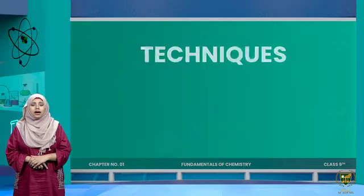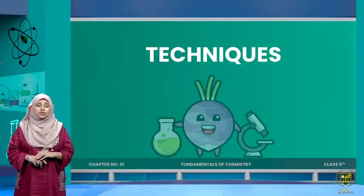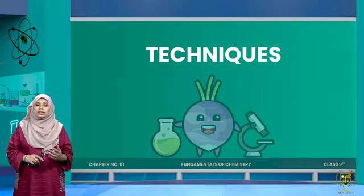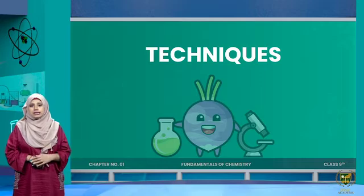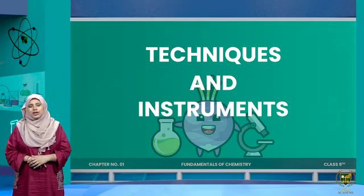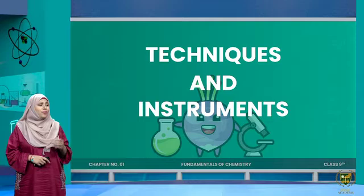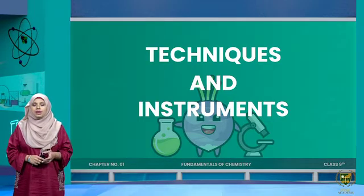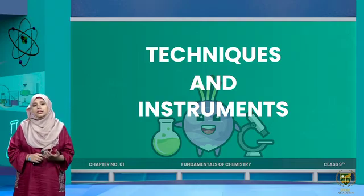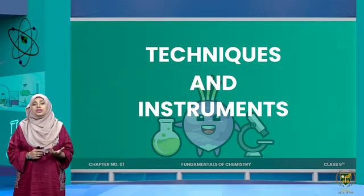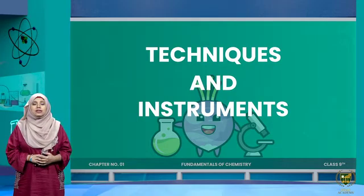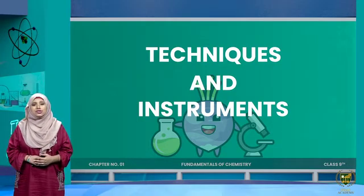In analytical chemistry, we also learn various techniques and instruments to separate components. For example, you cannot separate the components of a cookie with your hands — you need instruments and specific techniques. In chemistry, we deal with very complex substances, so many techniques and instruments are needed. The scope of analytical chemistry is very broad — anything whose composition you need to analyze falls within its scope.